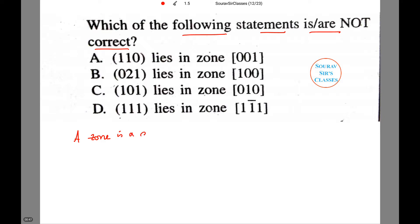A zone is a set of crystal faces whose pairwise intersection line is parallel to a given lattice direction.